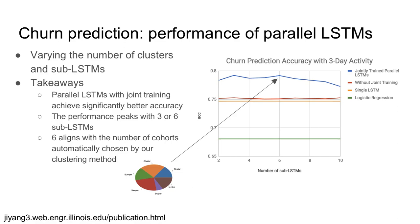Therefore, we further develop a framework based on parallel LSTM and attention mechanism to jointly predict user types and user churn. We find that our framework is able to outperform classic industrial churn prediction algorithms like logistic regression and random forest by really large margins. This is especially the case when we only have very limited user activity data, such as their three-day activities after joining the app.